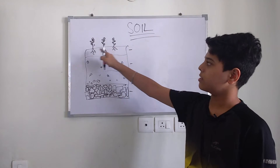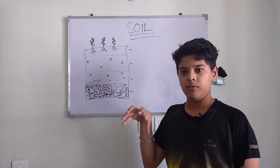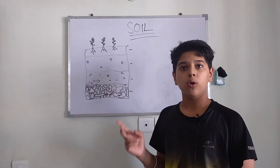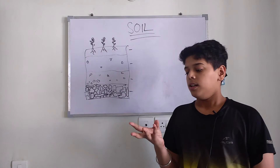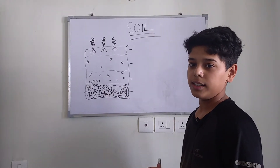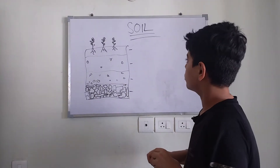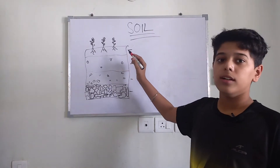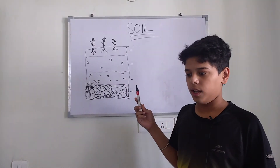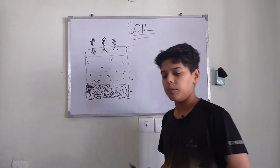Soil is the most important natural resource. It provides anchors to the plants — the plants stay in place in the soil because the roots hold the soil. Soil is also home to many living organisms such as rodents, earthworms, and many other insects. The soil is also used in agriculture; all plants are grown in soil, including food crops and many other things.